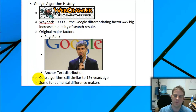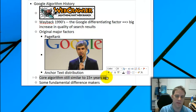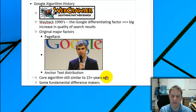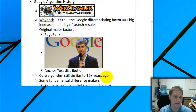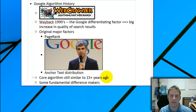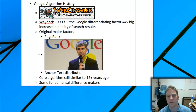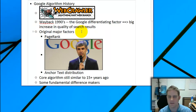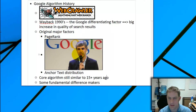The core algorithm is still pretty similar to what it was 15 years ago. They still take into account links and the amount of juice and authority. Google has even stated they've tested search engines privately without links and it just doesn't work as well.